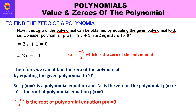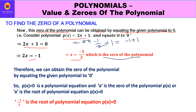For example, if p(x) = 2x + 1, we set 2x + 1 = 0, so 2x = −1, therefore x = −½. This −½ is the zero of the polynomial. Let us verify: substituting x = −½ gives 2×(−½) + 1 = −1 + 1 = 0. So −½ is indeed that number which replaces x and gives the value of the polynomial as 0.